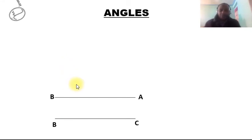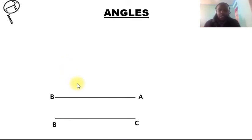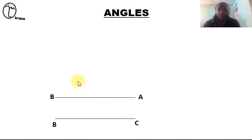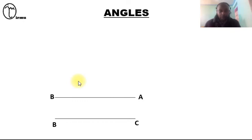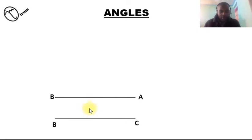Hello and welcome to today's lesson where I will take you through the topic of angles. What do you understand by the term angles? An angle is formed when two lines meet at the point of intersection — that is where an angle is formed. For example, I have two lines here: line AB and line BC.